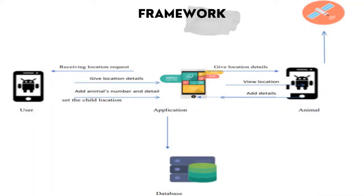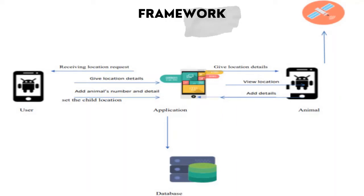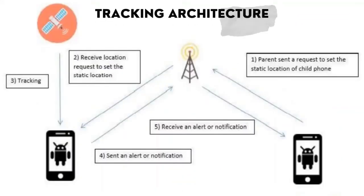The framework that our application uses is like the figure being shown on the screen. The user will add the animal's number and details. When the user asks for the location of a particular animal, the GPS — which is connected to both the user's device and the animal tracking device — will send a response to the user device, and the tracking device will fetch the location and pass it on to the user.